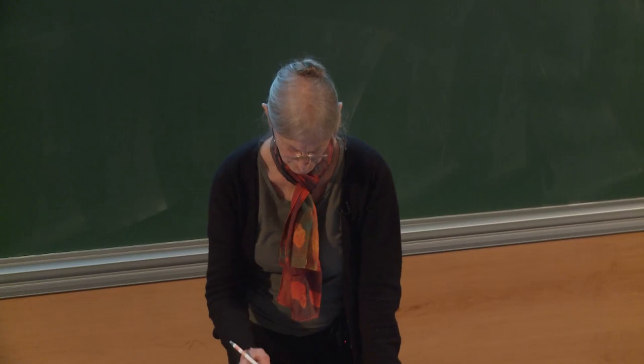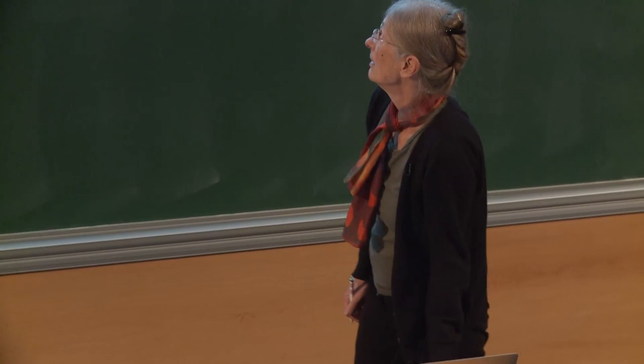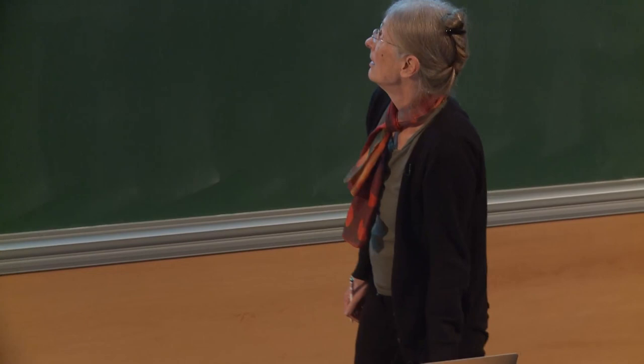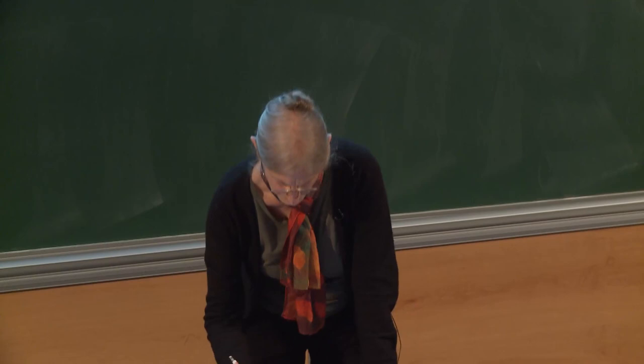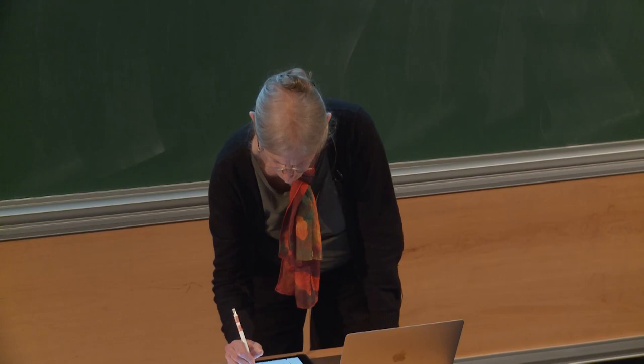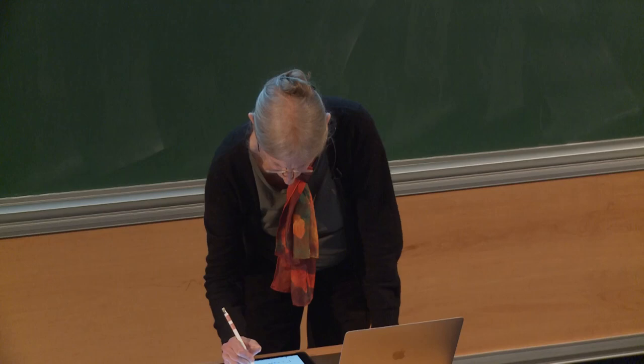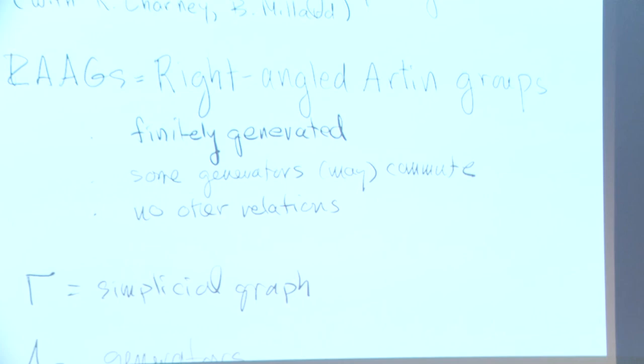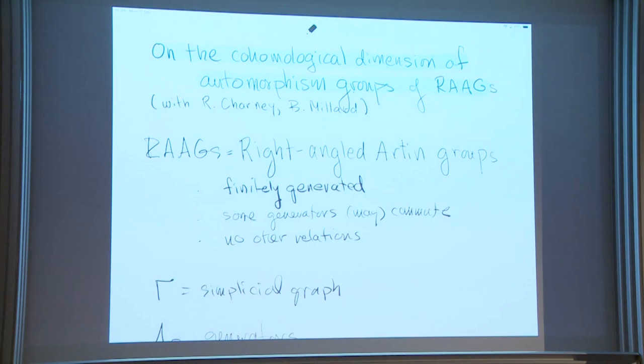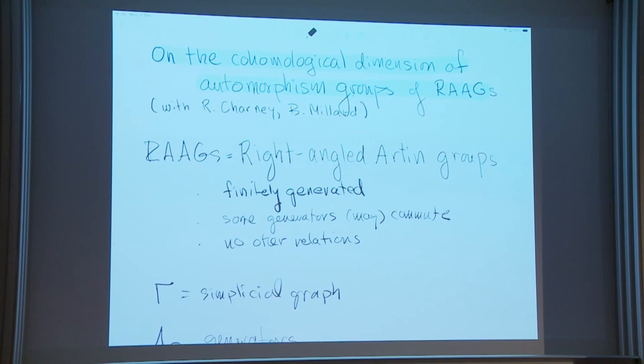They're finitely generated groups. What makes it a Right-Angled Artin Group is that some of the generators may commute, and there are no other relations — meaning you don't have to specify any other relations in order to define the group. The way you usually describe a Right-Angled Artin Group is by drawing a graph.